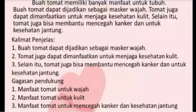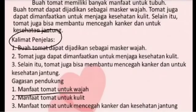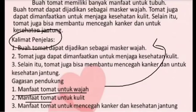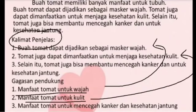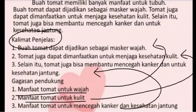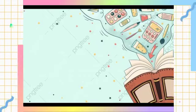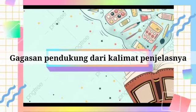Sekarang kita menentukan gagasan pendukungnya dari kalimat penjelas tadi. Yang pertama, manfaat tomat untuk wajah, yang terdapat di dalam kalimat penjelas pertama. Yang kedua, manfaat tomat untuk kulit, yang terdapat di dalam kalimat penjelas nomor 2. Yang ketiga, manfaat tomat untuk mencegah kanker dan kesehatan jantung, yang terdapat di dalam kalimat penjelas nomor 3. Jadi, gagasan pendukung dapat ditentukan dari kalimat penjelasnya.